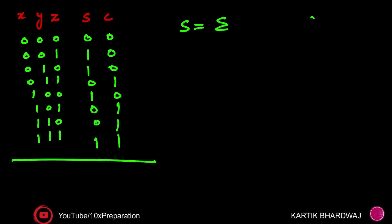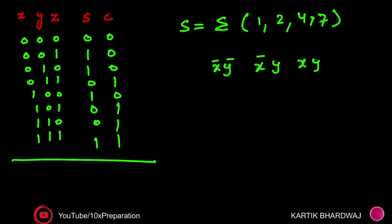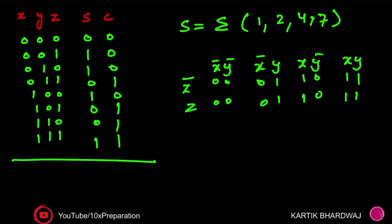The Sum function in sum-of-products form covers minterms one, two, four, and seven. If you solve this using a K-map you get the XOR of the three variables. To reduce the MUX size by one variable, we group the pairs as: X'Y', X'Y, XY', and XY — these become the four MUX input groups. Z and Z-bar are then placed at the inputs accordingly.